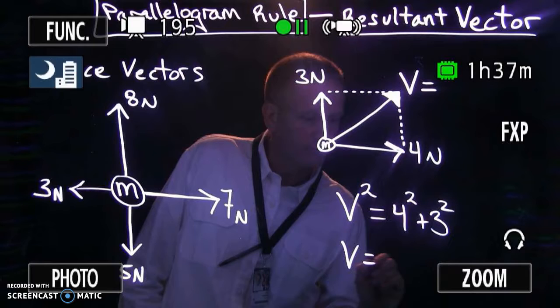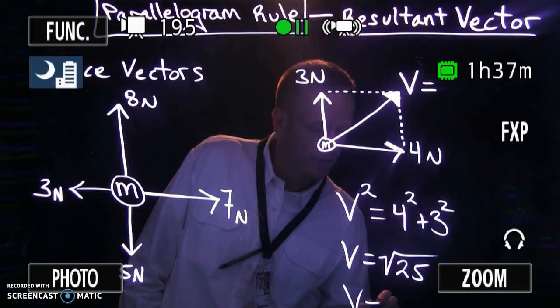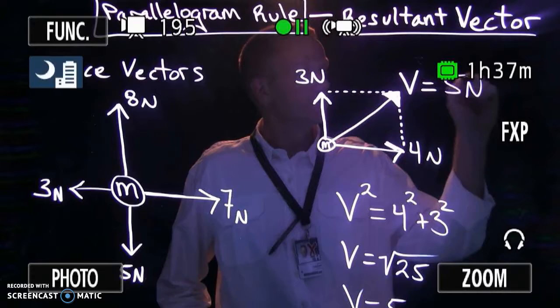We solve for that and it becomes the square root of 25, which is 5. So this vector has a magnitude of 5 newtons in the direction drawn.